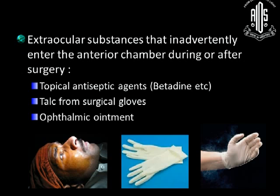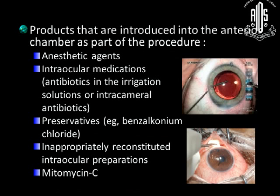What are the sources of these toxic agents? First, extraocular substances that inadvertently enter the anterior chamber during or after surgery, such as topical antiseptic agents like povidone-iodine, talc from surgical gloves, and ophthalmic ointments. Next, products introduced into the anterior chamber as part of the procedure, like anesthetic agents, intraocular medications such as antibiotics in the irrigating solution or intracameral antibiotics, and preservatives like benzalkonium chloride.